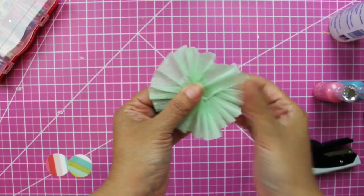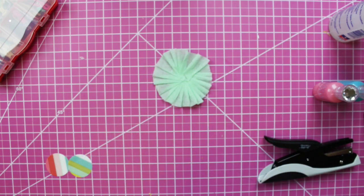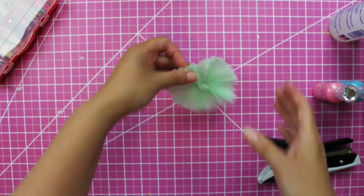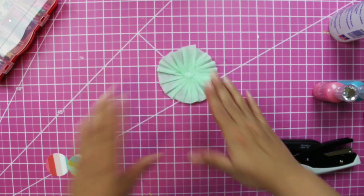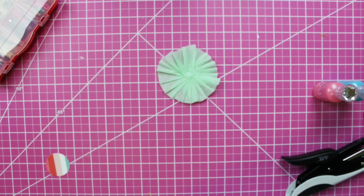Okay, so here's your rosette. And before I cut the edges, what I do is I place one of the circle punch cuts and glue them.